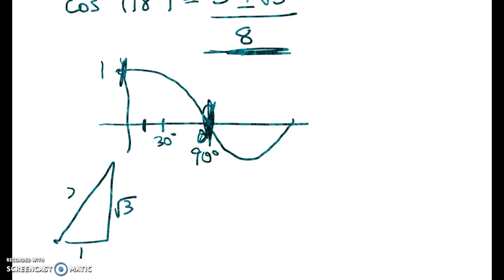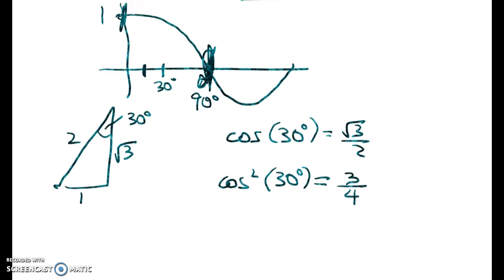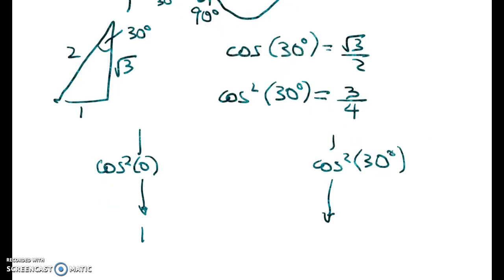So we've got 1, we've got root 3 over 2, and there's 30 degrees there. So we can say that cos of 30 degrees is equal to root 3 over 2, and cos squared of 30 degrees is equal to that squared, so 3 quarters. So we've got cos squared of 0 here, and we've got cos squared of 30 here. So this is 1, and this is 3 quarters. Because the function is decreasing, what we call monotonic, cos squared of 18 degrees must be between these two numbers.